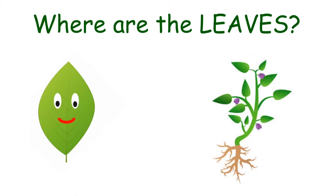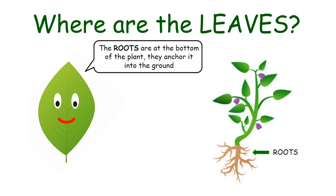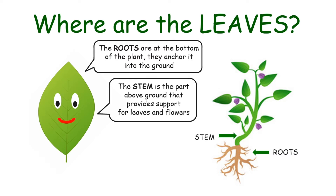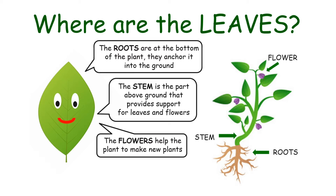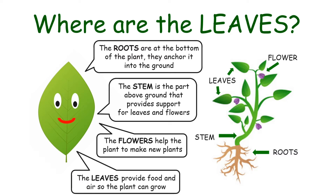Where are the leaves? The roots are at the bottom of the plant — they anchor it into the ground. The stem is the part above the ground that provides support for leaves and flowers. The flowers help the plant to make new plants. The leaves provide food and air so that the plant can grow.